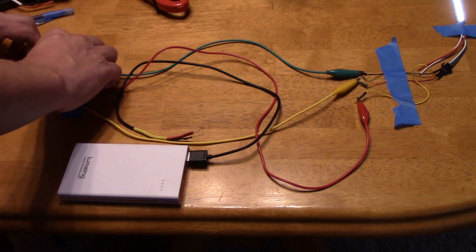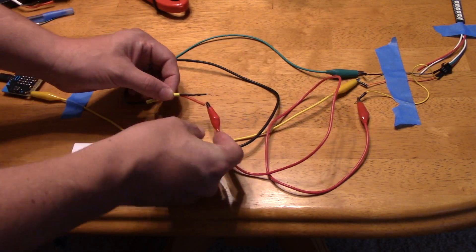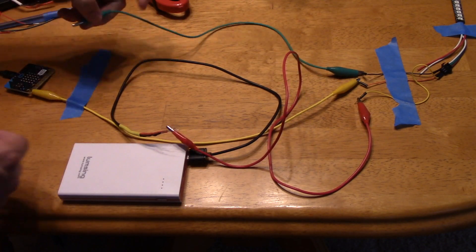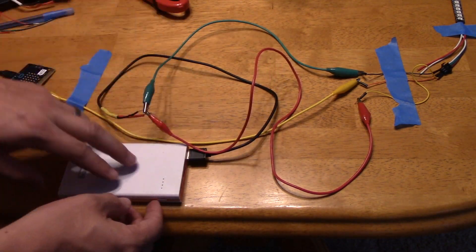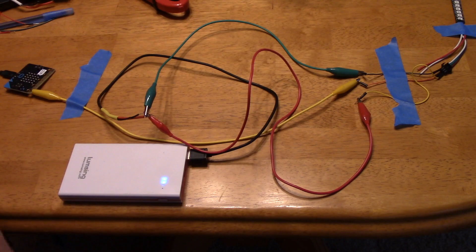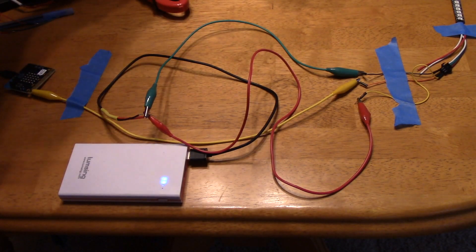To do this one we're going to take the positive end of the LED and hook it up to the positive end of the USB and connect the ground to the negative. You'll see that once we do this it doesn't work and this is because we actually have to connect the grounds together.